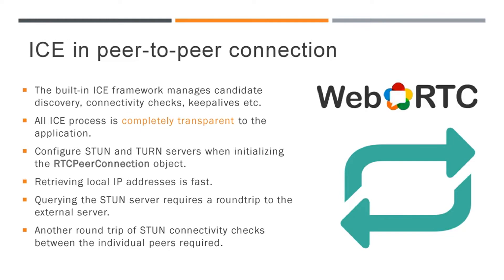In the ICE process, retrieving local IP addresses is always fast. But querying the STUN server requires a round-trip to the external server, and another round-trip of STUN connectivity checks between the individual peers is also required. So there will be a delay in the connection.